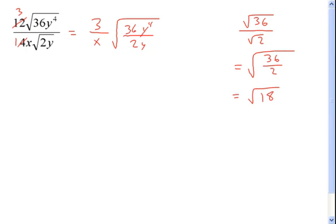Then I would reduce the 36 and the 2 to get 1 and 18, and then the y to the 4th and y—what happens? Y to the 3rd up top, right?